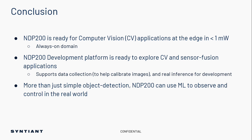NDP 200 is ready for computer vision. We see the applications under a milliwatt running a lot of the networks you're going to need for vision at the edge. We have the development platform to ease your path into this. Go collect data, go pull the power supply pin and measure the power on our device. We always get the question, 'I don't believe your power numbers' — well, take the dev board and go measure it for yourself. People always come back and say, 'yeah, that's what you said is actually what's happening.' Computer vision at the edge is more than just object detection — it's a way to interact with the world, to act, control, and be more like a natural machine learning interface. We see, hear, and feel the world, and use machine learning to do it better than anybody else.